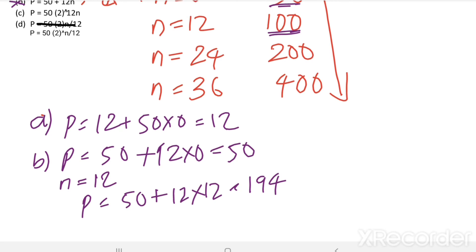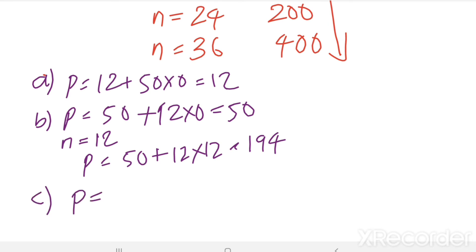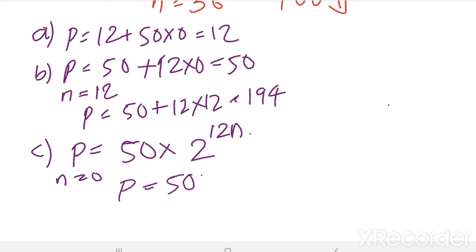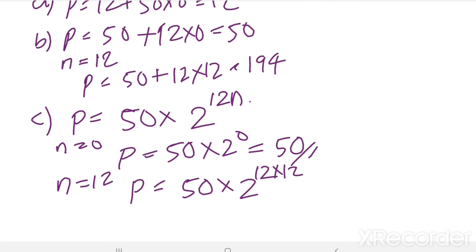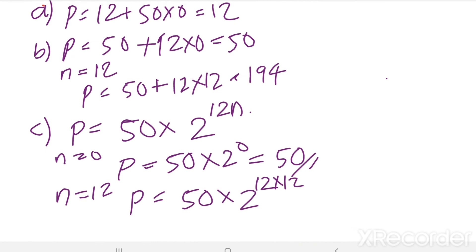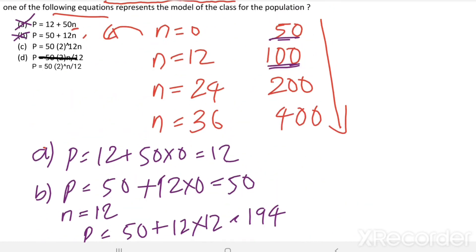Then see the third option: p equals 50 times 2 to the power of 12n. When n equals 0: p equals 50 times 2 to the power of 0, which equals 50 — this is right. But when n equals 12: p equals 50 times 2 to the power of 144, which is a huge number and not equal to 100. So we can eliminate the third option also.